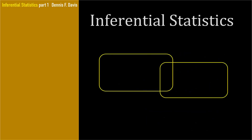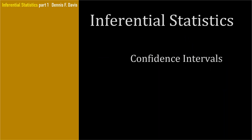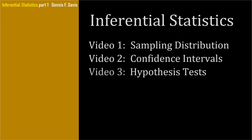Inferential statistics depends on prior knowledge of both probability and statistics, which are two completely separate topics but often taught together because they're both needed to understand inferential statistics. There are two types of inferential statistics: confidence intervals and hypothesis tests, and there's a key building block both of these depend on called the sampling distribution. This video will cover the sampling distribution, video two will cover confidence intervals, and video three will cover hypothesis testing.